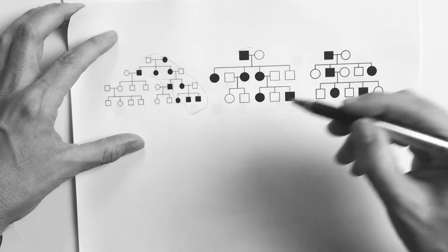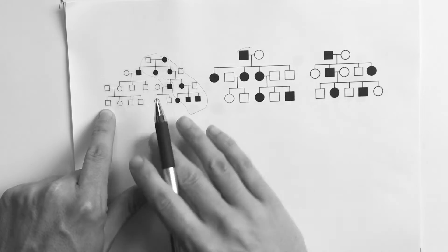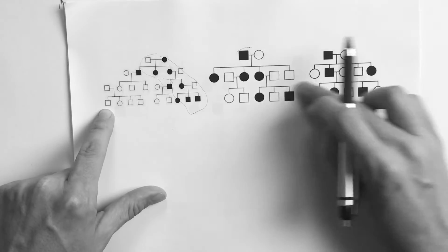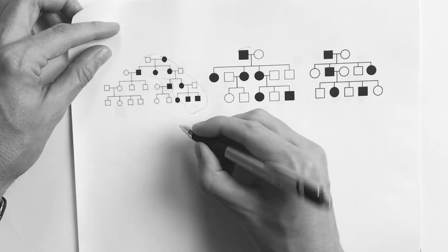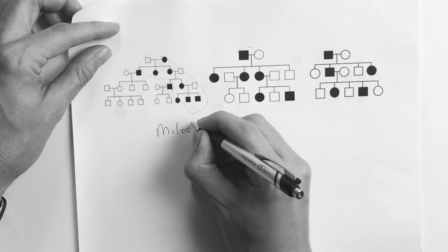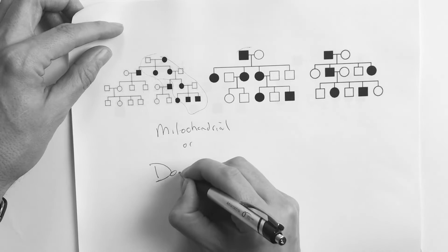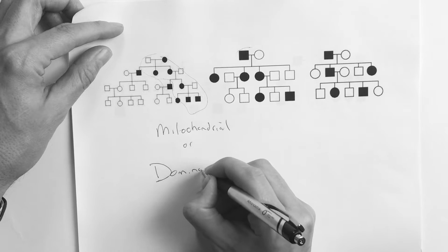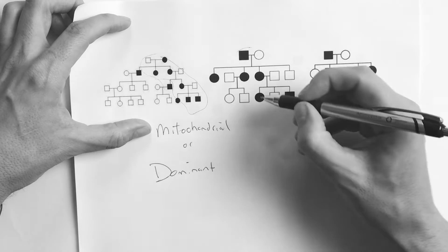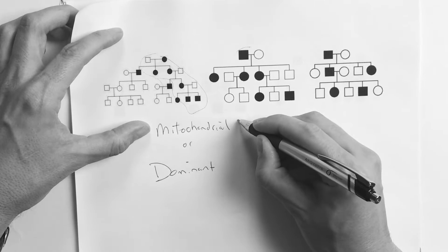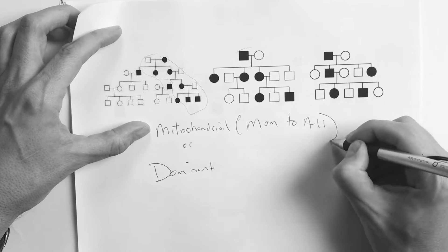If something skips a generation, it wouldn't be considered dominant. But if it's in every generation, I want you to think either mitochondrial or dominant. We're going to go ahead and rule out mitochondrial right off the bat, because remember the rule for mitochondrial is going to be mom to all.